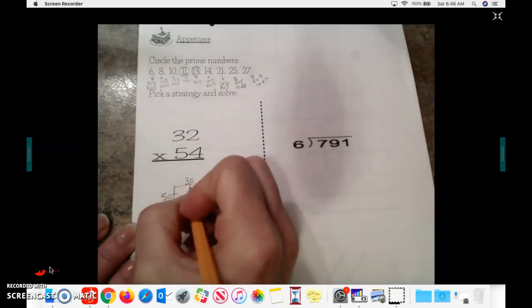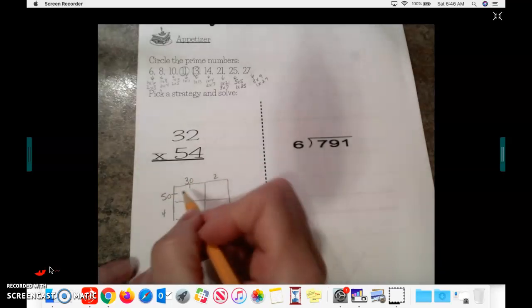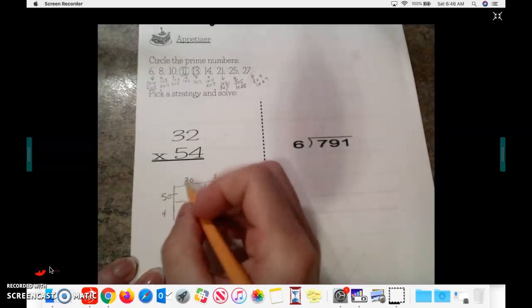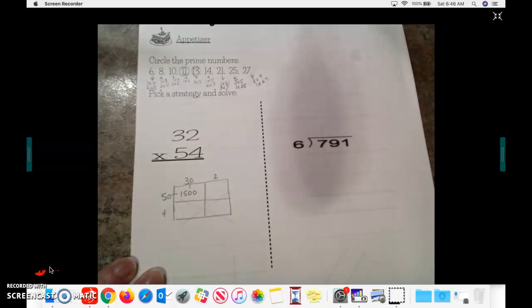First, I'm going to do 50 times 30. That's a big number, so I know that I can't find that on my multiplication chart, but I can do 5 times 3. And I know that 5 times 3 is 15, and I have two zeros. So I'm going to add those two zeros.